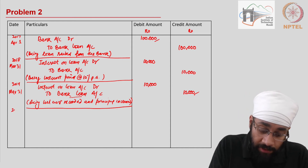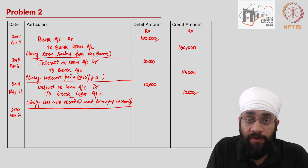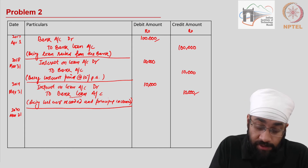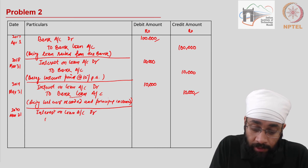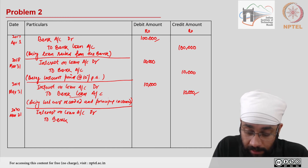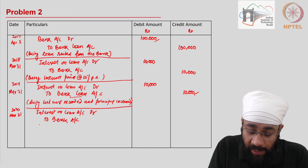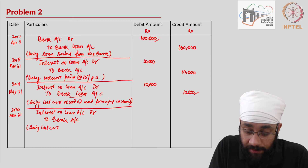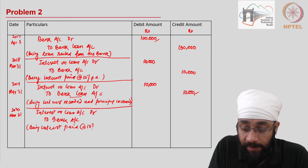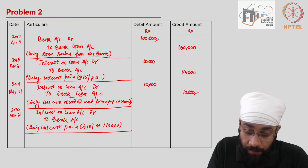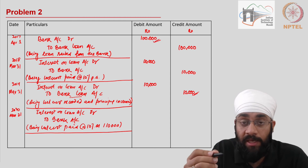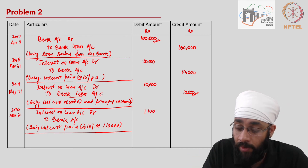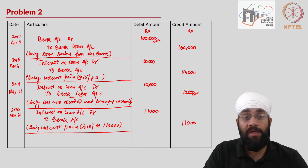In the third year, March 31, 2020, you pay the interest again. The entry is: Interest on Loan Account debit, to Bank Account credit. The narration: being interest paid at the rate of 10 percent on 110,000 — which is the new principal of 100,000 plus the 10,000 added to the loan. So the interest amount is 11,000 rupees, and you pay that interest.